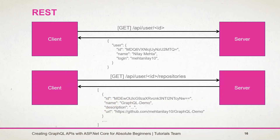However, the client is only interested in the name and URL. There is no way the client can inform the server to return just those two fields — the client must ignore the additional fields. Also, we have sent two individual requests here for obtaining the user detail and the repository detail.